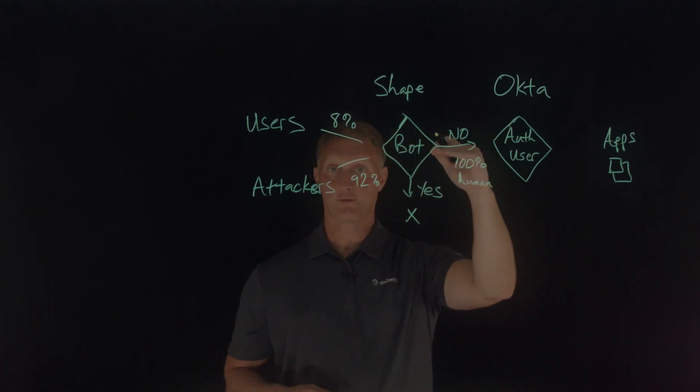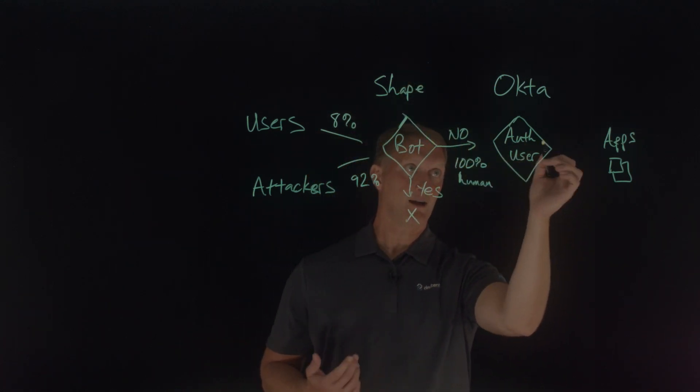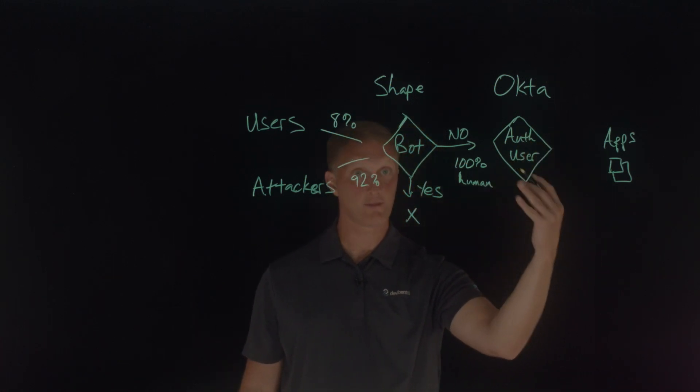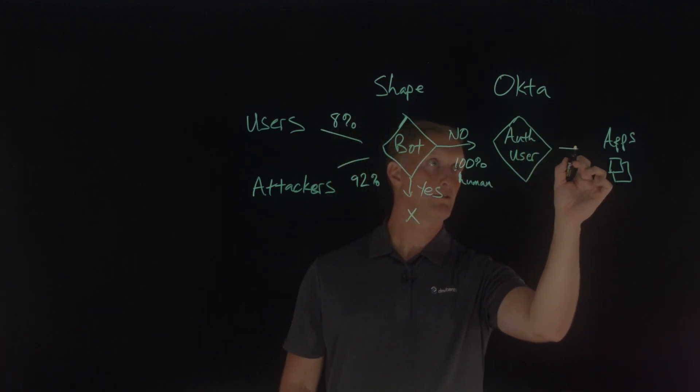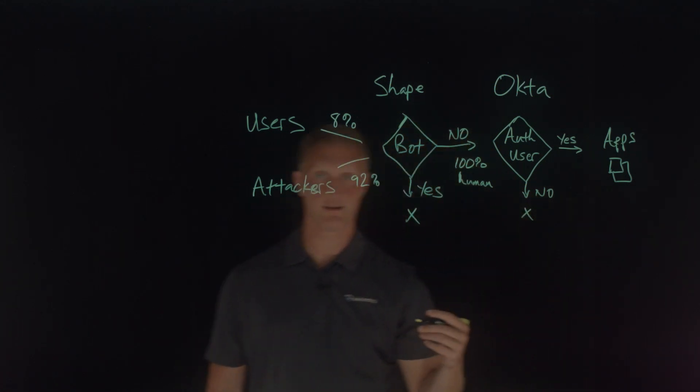And so these human users are going to come in, once they pass through the bot check from Shape, and then they're going to hit the Okta checks. And then Okta is going to say, hey, are you an authorized user or not? And if the answer is yes, then they gain access to the applications. And if the answer is no, then Okta would block that.